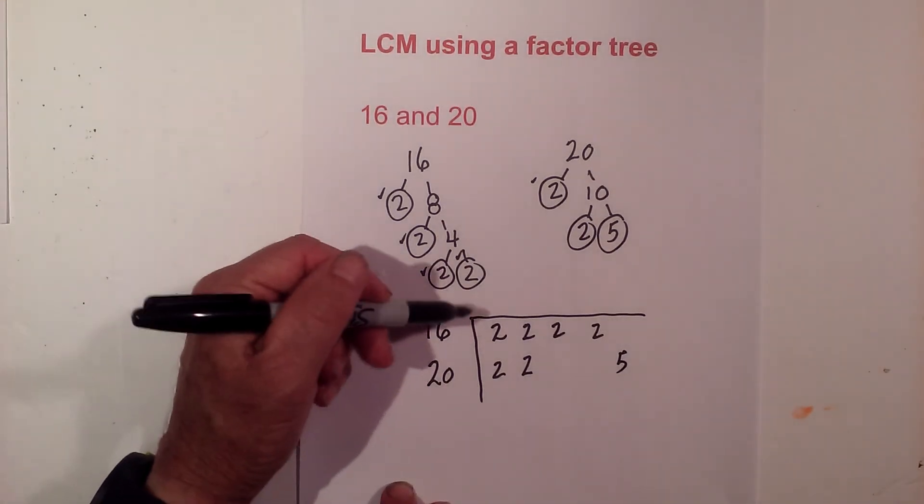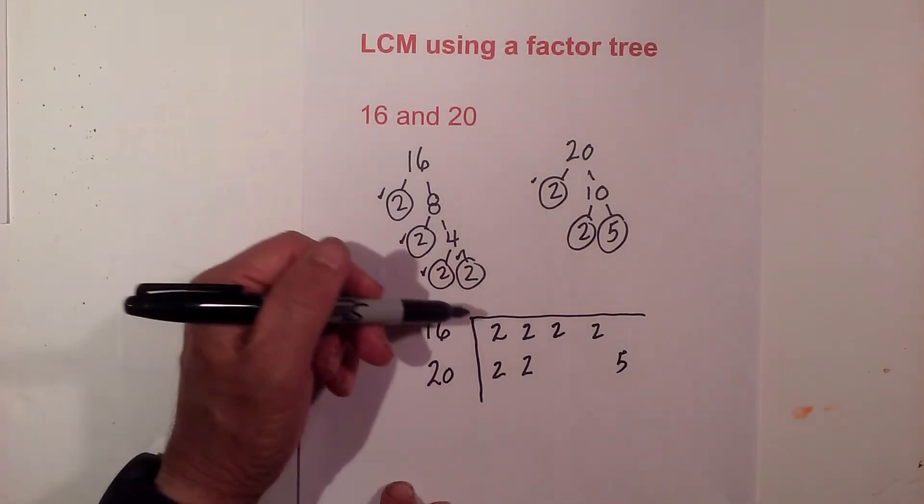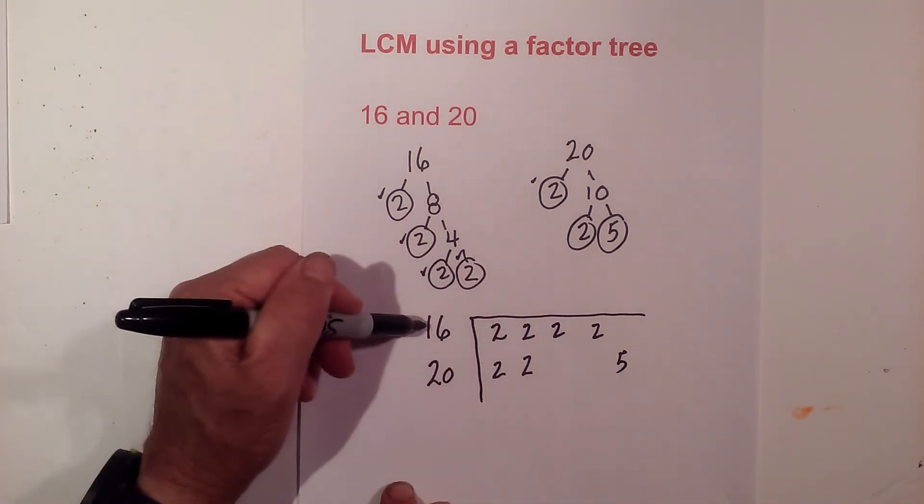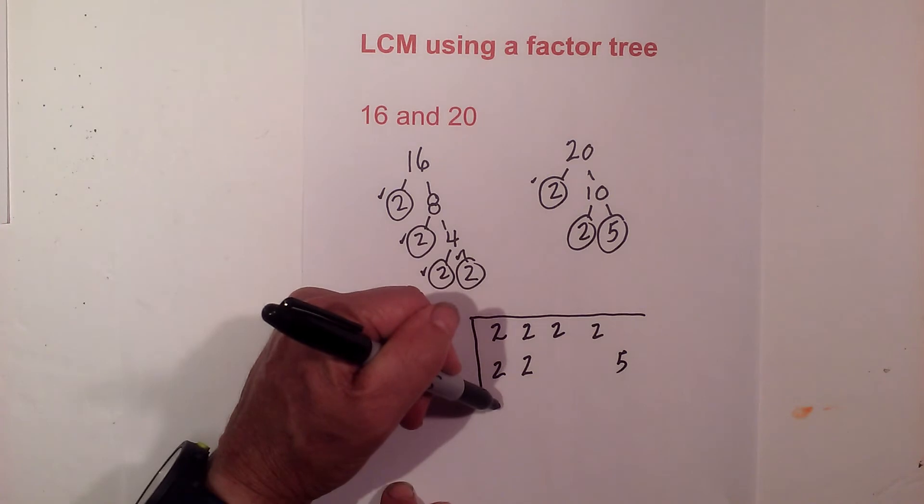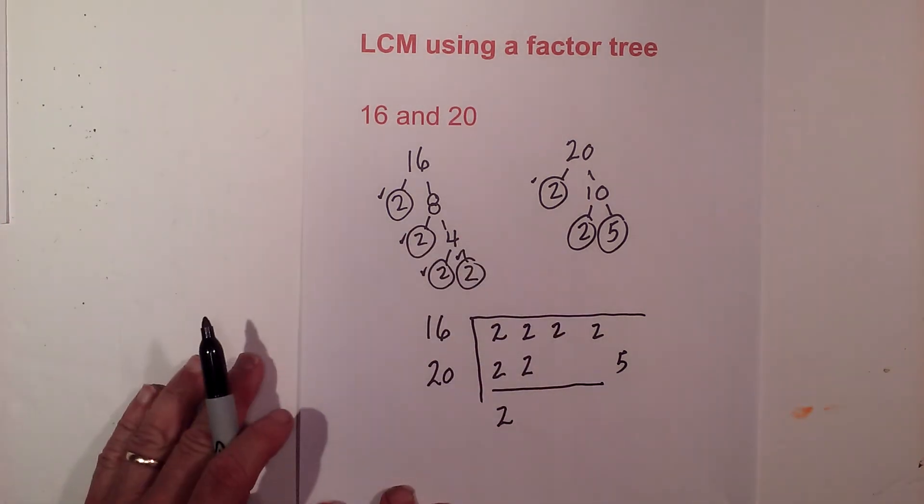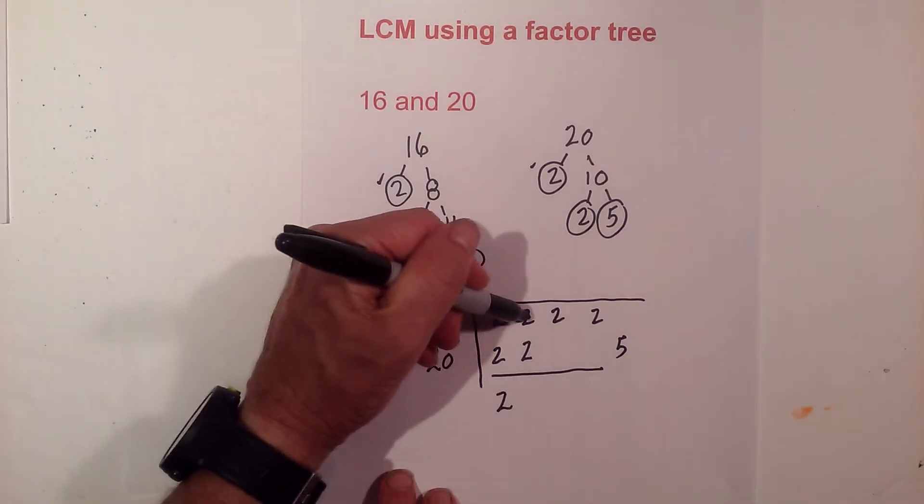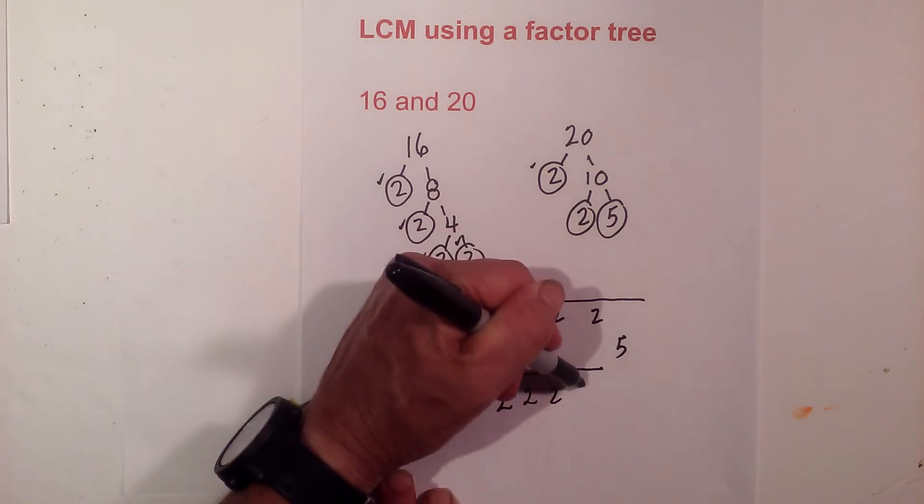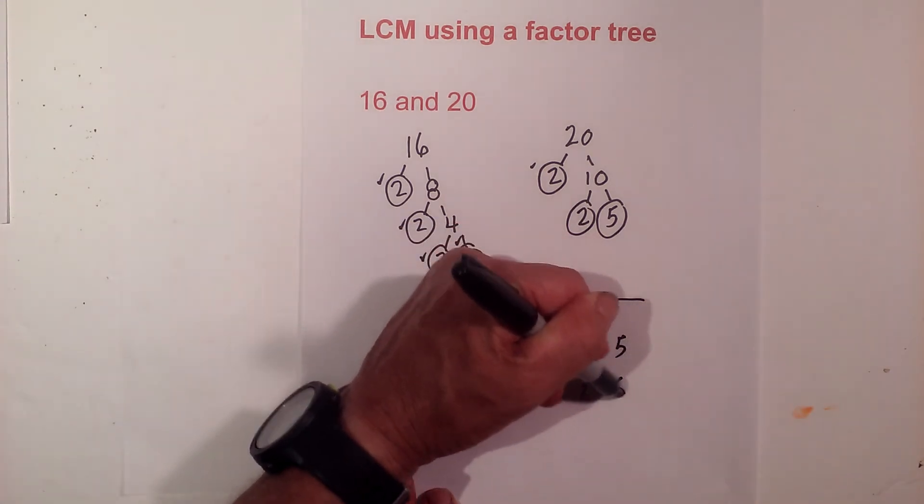Now the rule is, if you have a vertical pair, then you just use one. I have a vertical pair since I'm using two numbers, so I'm going to write 2 and draw a line here. Then there's another 2—bring this 2 down, this 2 down, and the 5.